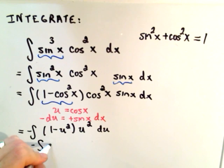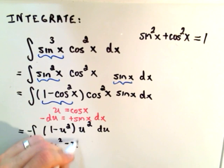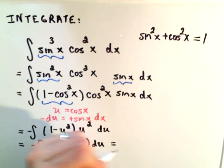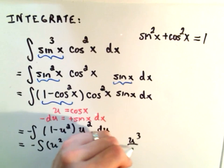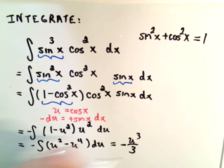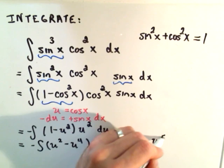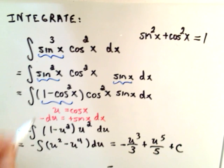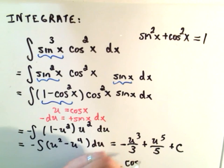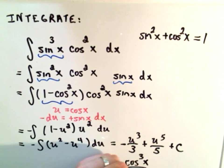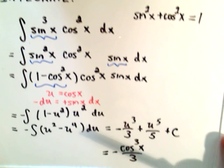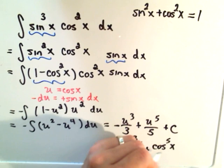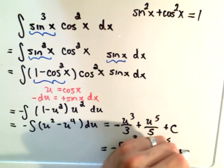Now it's just a regular old polynomial that you can multiply out. If you distribute, you'll get u squared minus u to the fourth du. If you just integrate this like normal, you'll get u to the third over three with my negative, if I distribute I'll get a positive u to the fifth over five plus c.